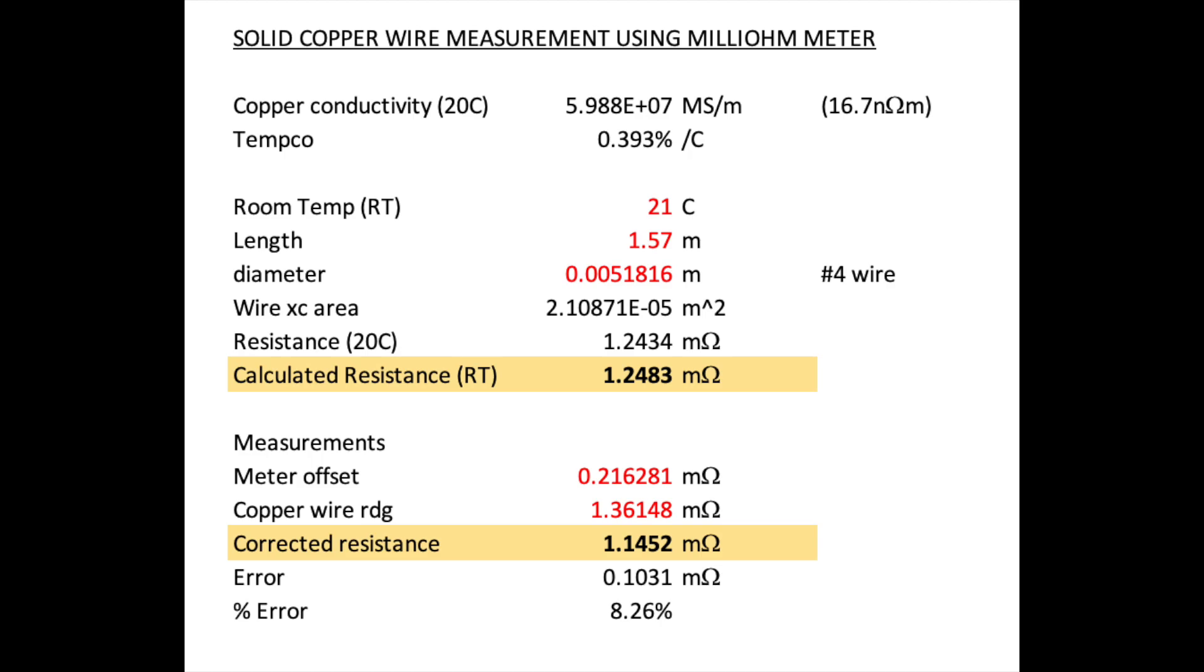Diameter is 0.204 inches, which works out to 0.0051816 meters. Wire cross-section area was calculated to be 2.108×10⁻⁵ meter squared. Resistance of that came out to be at 20 degrees Celsius 1.2434 milliohms. And if you adjust for room temperature, it's slightly higher, 1.2483 milliohms.